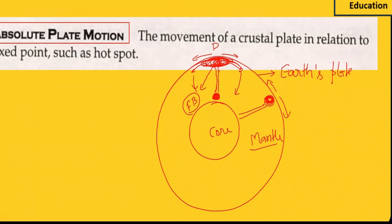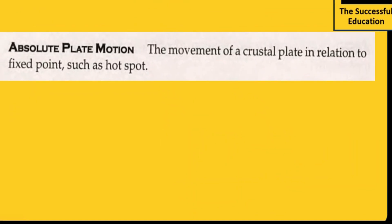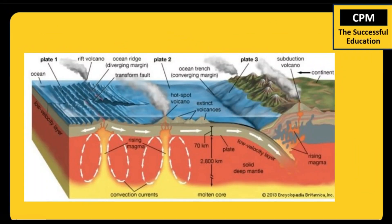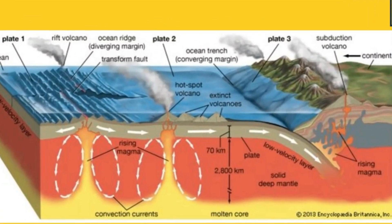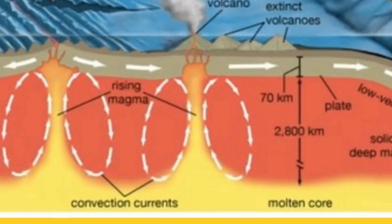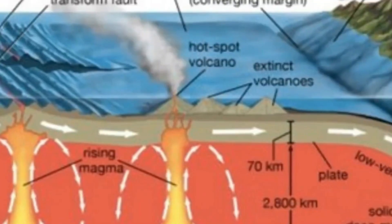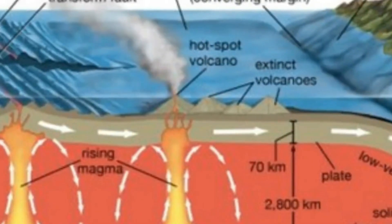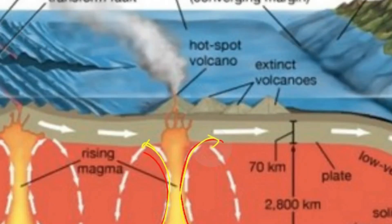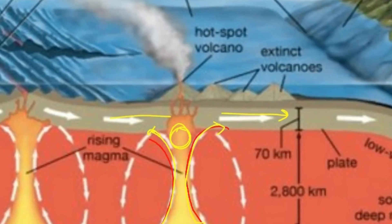We can see that the magma is moving upward here. This flood basalt is making the plate move away.